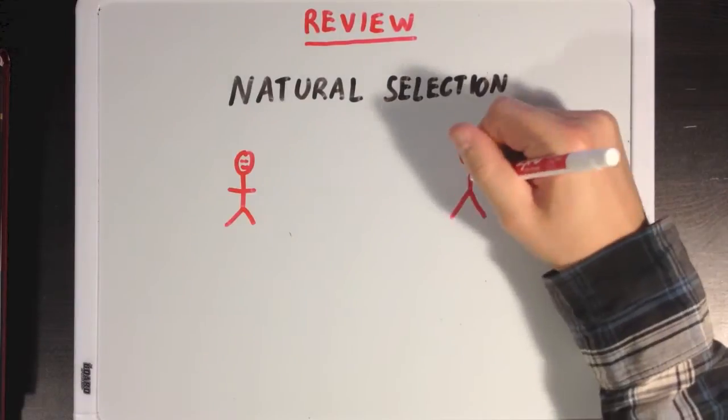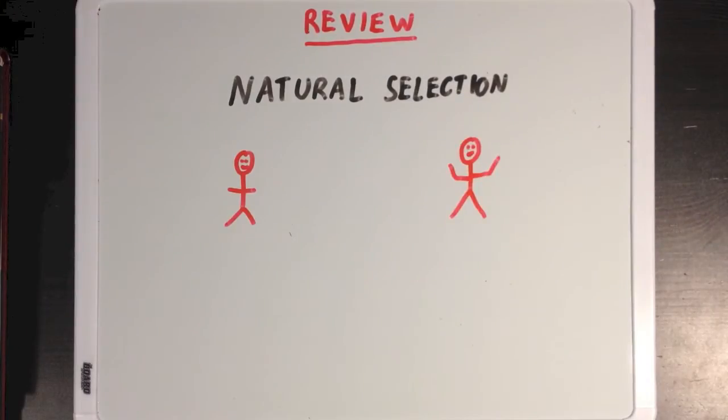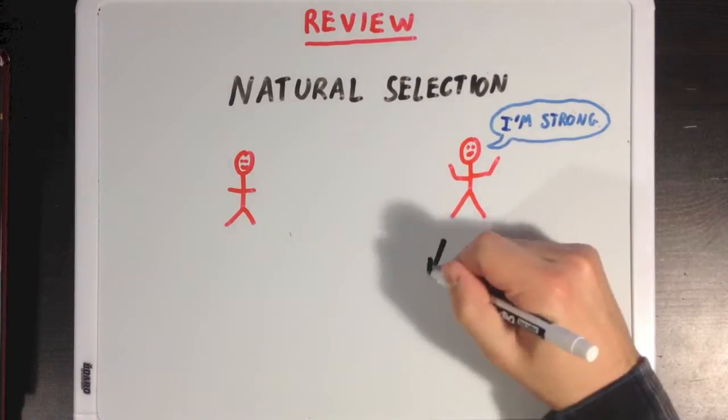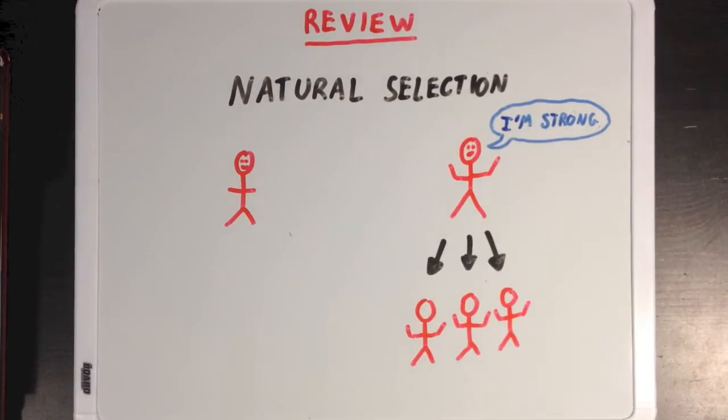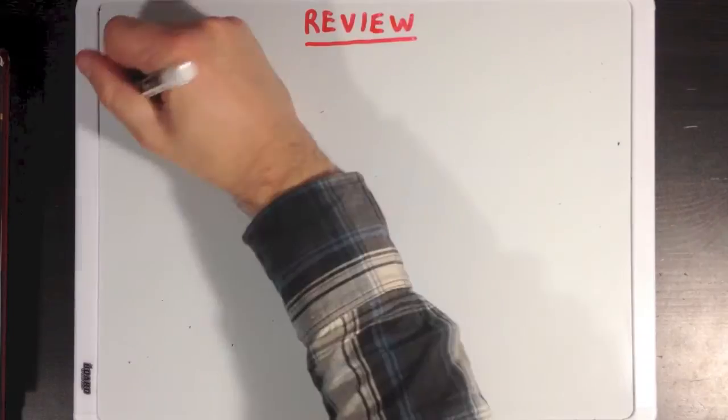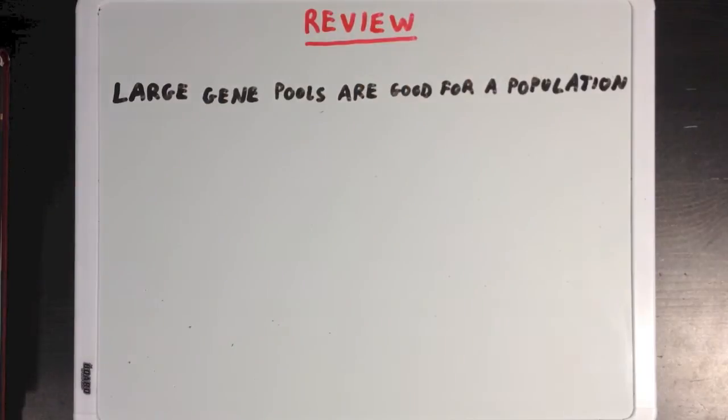And natural selection is the idea that a member of a population that has a special genetic trait that's advantageous is more likely to live to an age where they can reproduce and pass on that special trait to their offspring. And you should also remember that a population can get a lot out of having a big gene pool.